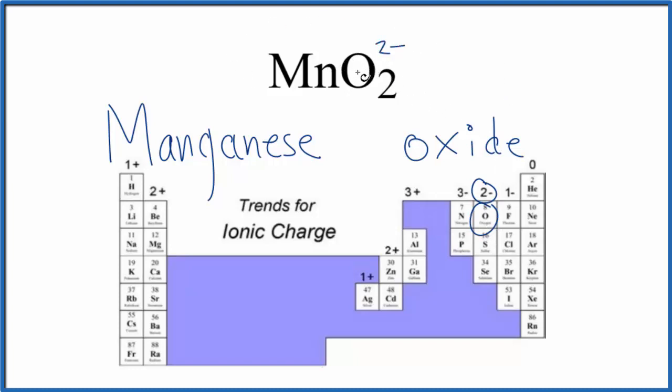So in order for everything to add up to 0, we have 2 times 2 minus, that's 4 minus. That means the manganese is going to have to be 4 plus. 2 times 2 minus, that's the 4 minus. 4 minus and 4 plus, that gives us 0.